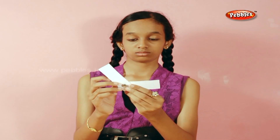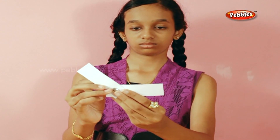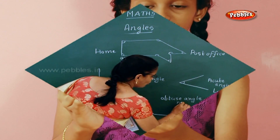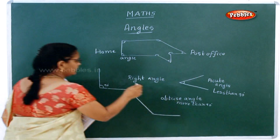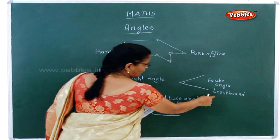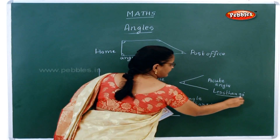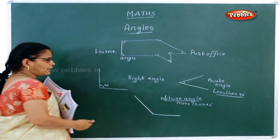The next angle on the angle tester — this you call it as obtuse angle, and this angle is more than 90 degrees. So there are three angles: right angle, which is equal to 90 degrees; acute angle, which is less than 90 degrees; and obtuse angle, which is more than 90 degrees.